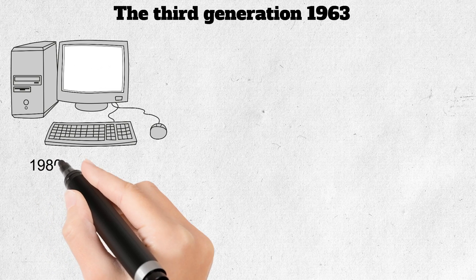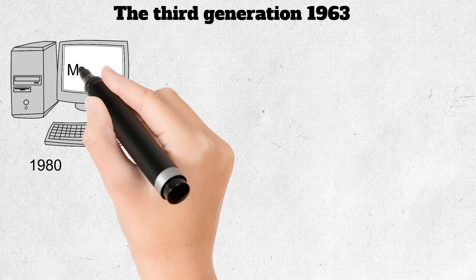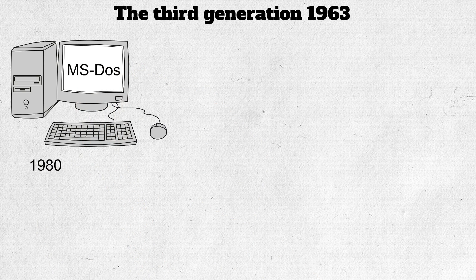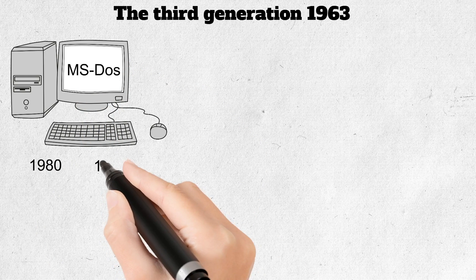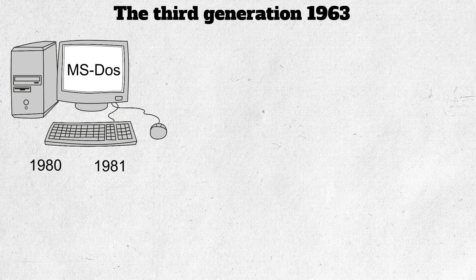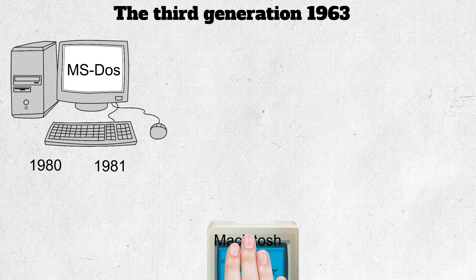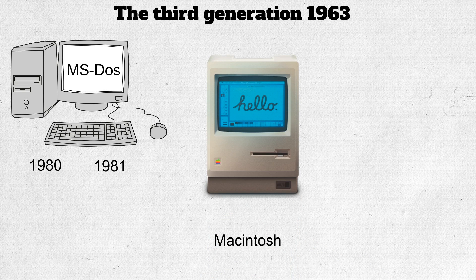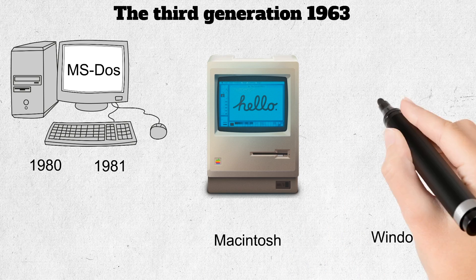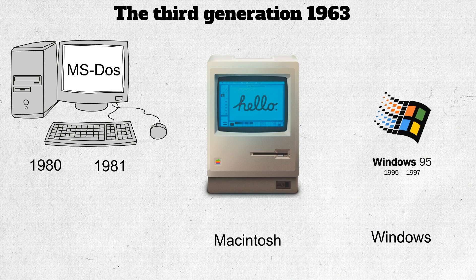In 1980, Microsoft Disk Operating System, better known as MS-DOS, was born. And in 1981, IBM introduced the personal computer for home and office use, known as the PC. Three years later, Apple gave us the Macintosh computer with its icon-driven interface. And the 90s gave us the Windows operating system.